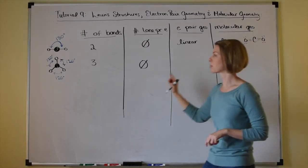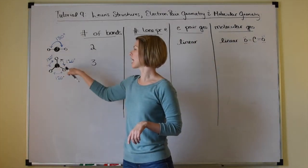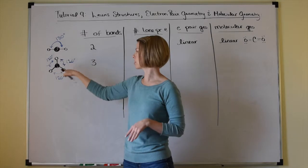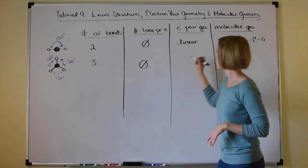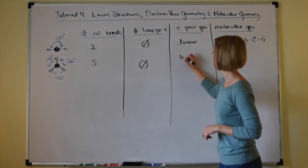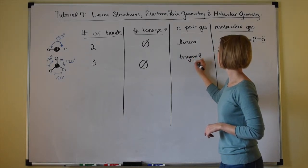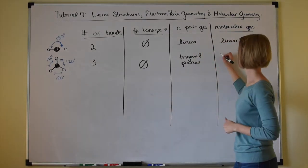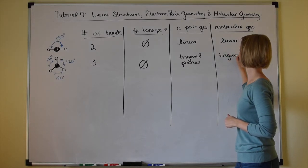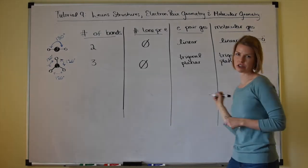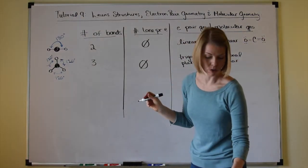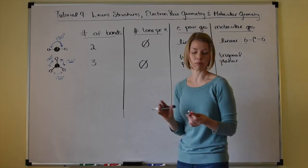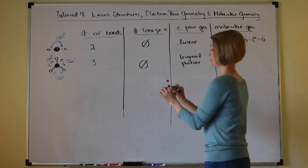The electron pair geometry — which accounts for all bonding and lone pair electrons — we call trigonal planar. Because there are no lone pairs, the molecular geometry is also going to be the same: trigonal planar. Some introductory textbooks call this planar triangular, so don't be thrown off if your textbook uses that terminology.